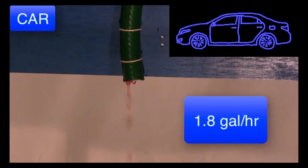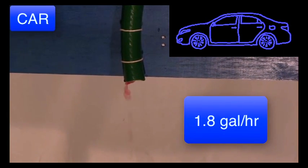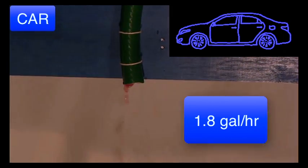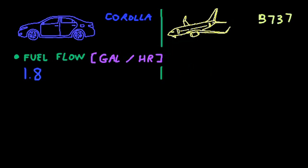Wow, this is a very thin stream of fuel. But in fact, that's all the Corolla needs to drive you at 60 miles per hour. Now, how many gallons per hour do you think a plane burns in cruise? Any idea? Here's a number.